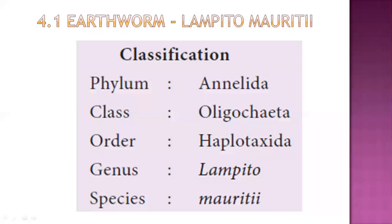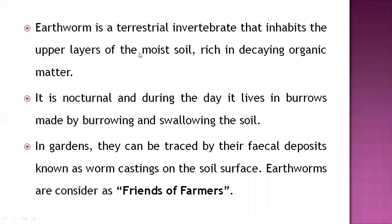Now we will see the earthworm. Classification is very important for each and every organism, so you have to remember classification including family and kingdom. These are the general characters of the earthworm. You know that it is a terrestrial invertebrate and it is nocturnal — it works at nighttime.